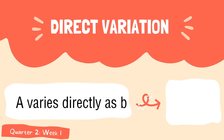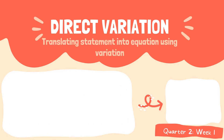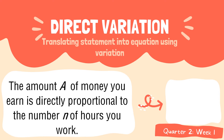Another example: a varies directly as b. If you are going to write this statement into an equation, it will be written as a is equal to kb. Next, the amount a of money you earn is directly proportional to the number n of hours you work. If we are going to write this statement into an equation, using the variable a for the amount of money and n for the number of hours you work, this will be written as a is equal to kn.